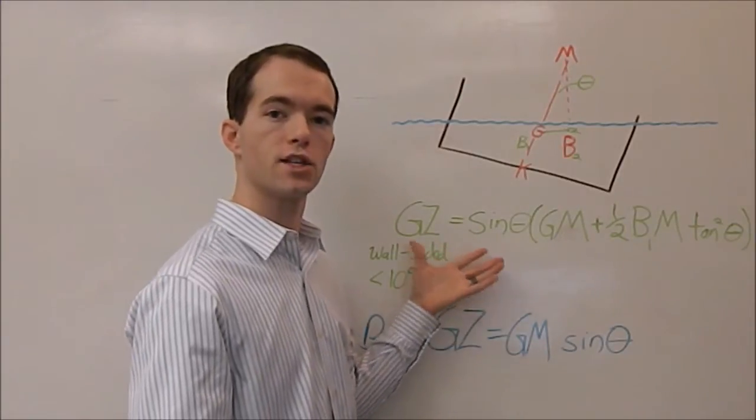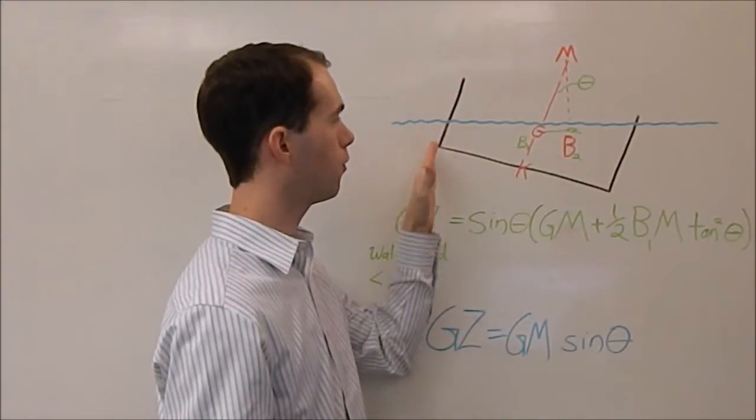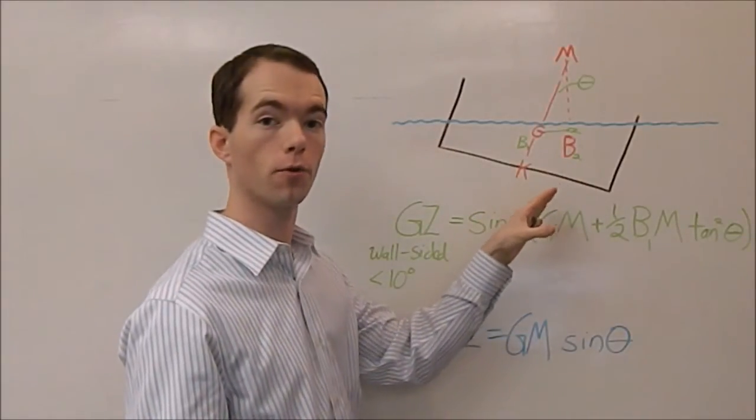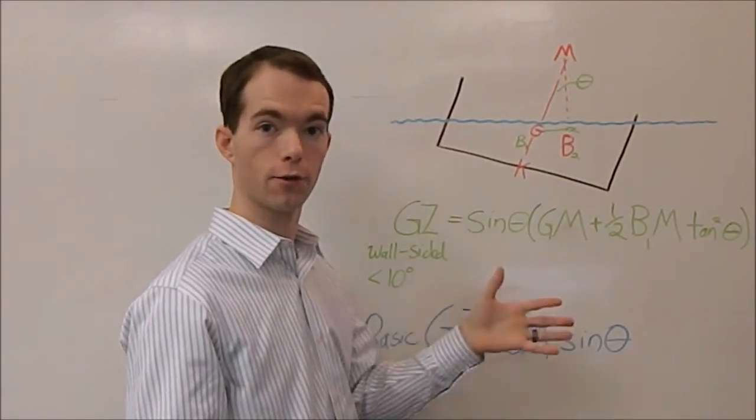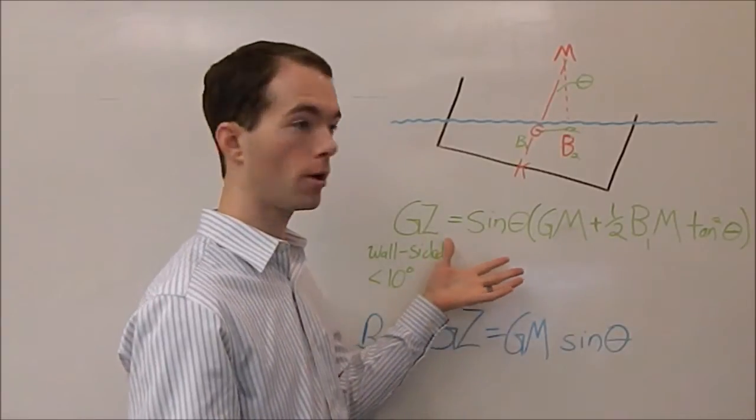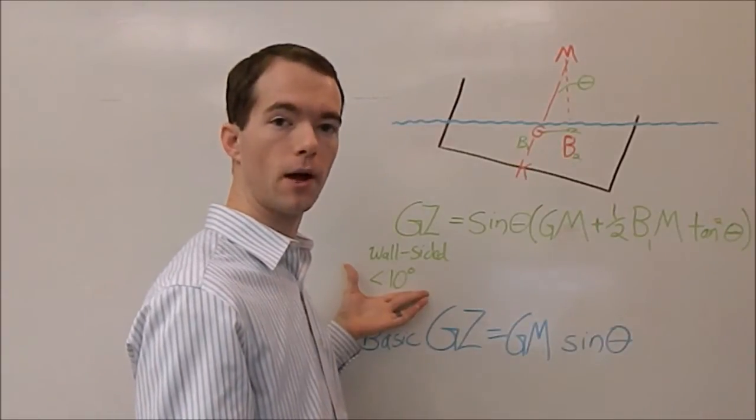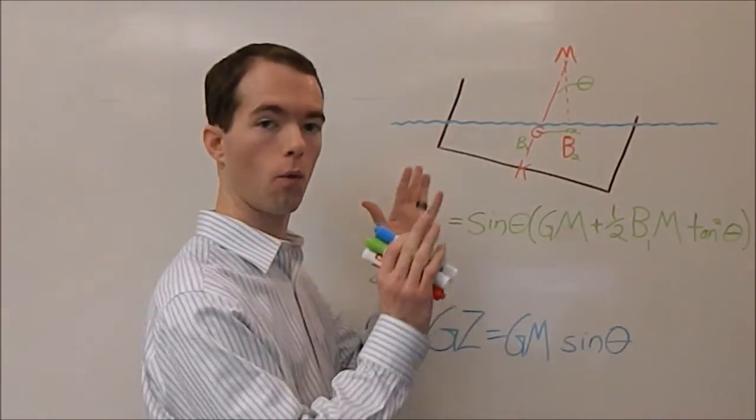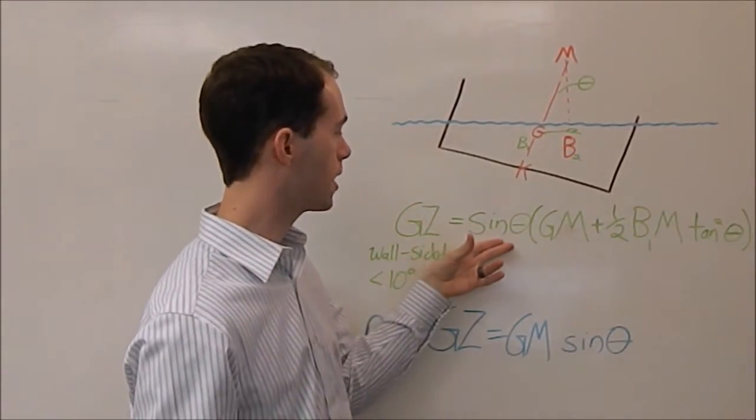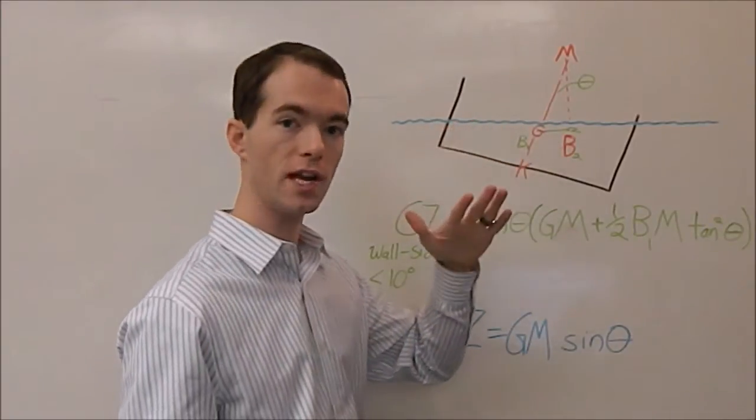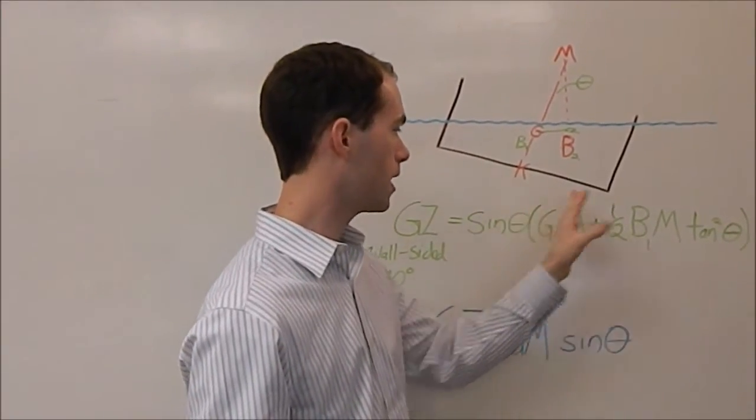This formula here is a special case formula when you have what you call a wall-sided boat. Wall sides mean your sides are almost perpendicular to the bottom of your boat. They look like walls in a room. This only works though for angles about less than 10 degrees of wall tilt. But what it says, if you can't read it, is sine of theta, which is your heel angle. Sine of theta times all of this, which is GM.